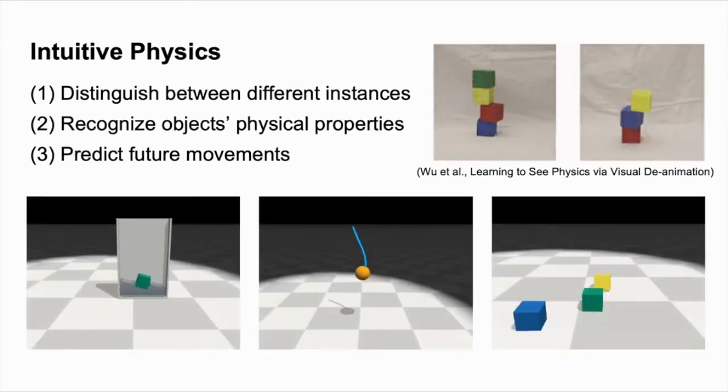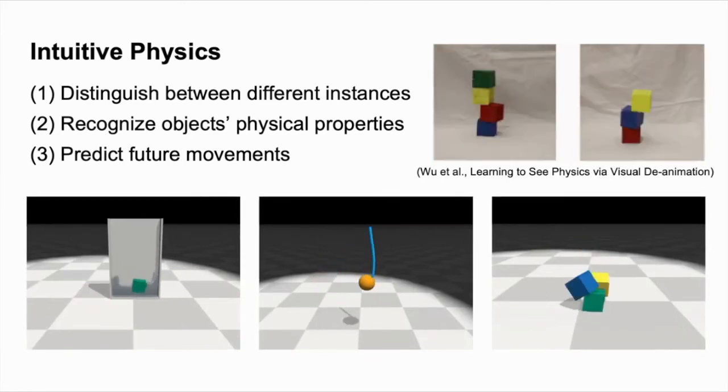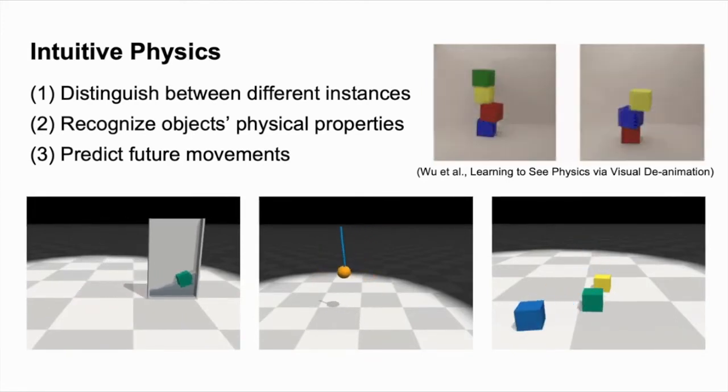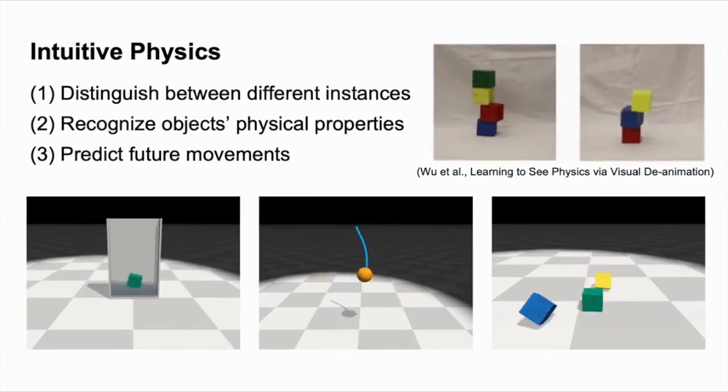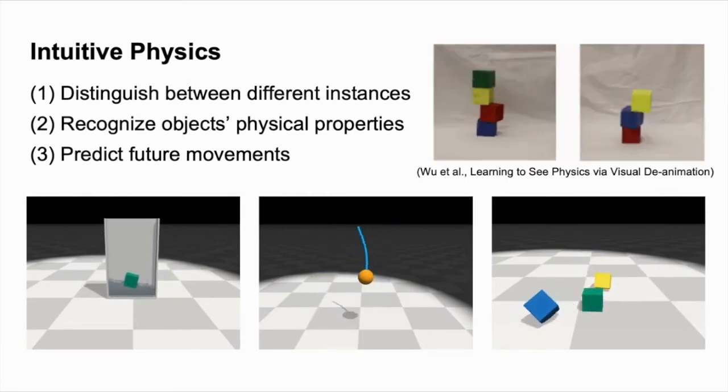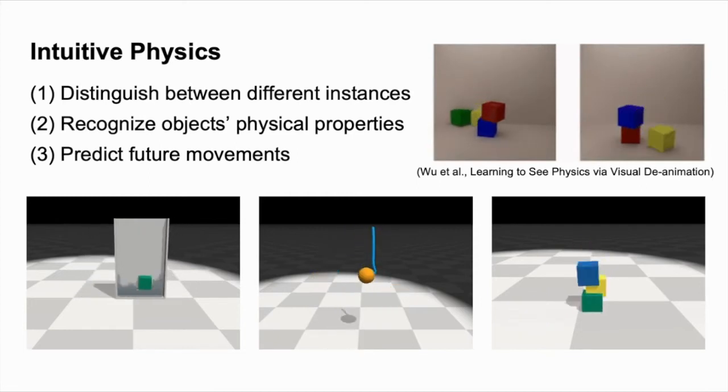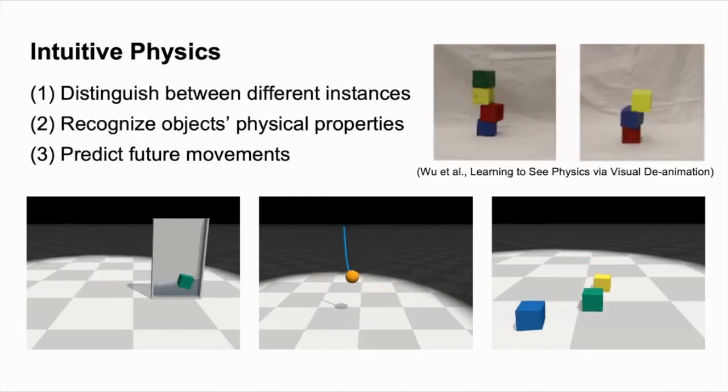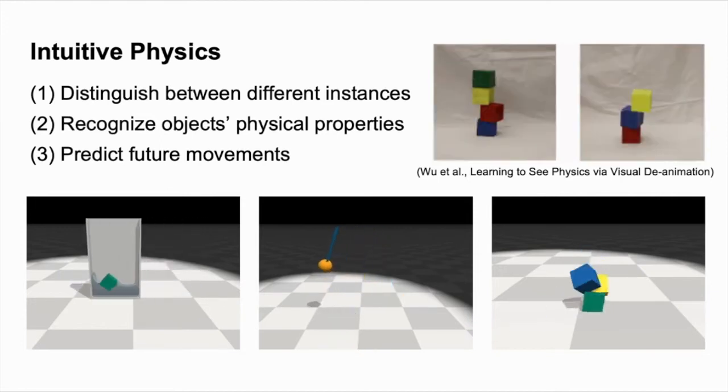More impressively, this ability applies not only to rigid bodies, but also deformable objects such as elastic materials and fluids. Given the example shown in the videos, humans can automatically identify the separation between liquid and solid, estimate their physical properties such as viscosity, stiffness, and gravity. We can also predict key features of their future motion through mental simulation.